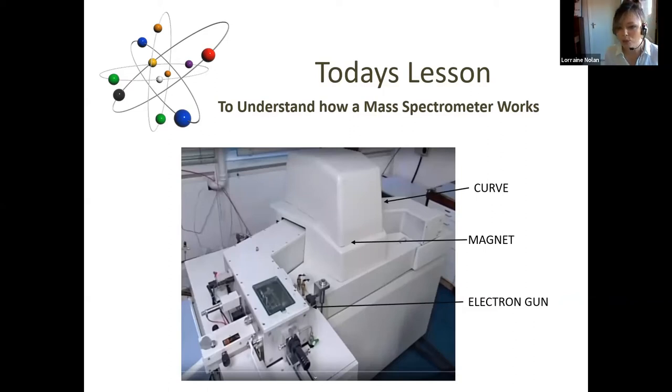So I decided to look at something that is on the IFY syllabus that reminds me of CSI, and that is the mass spectrometer. And I want to use our 20 minutes to understand a little bit how the mass spectrometer works. Now, you can see there a picture of the mass spectrometer. It's a massive machine. It's very expensive. And I have highlighted three parts. I have highlighted the electron gun, the magnet, and the curve. And I want you to keep in mind those three parts as we go through today's lesson.